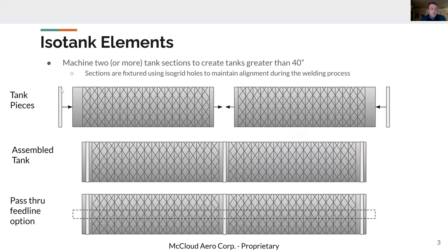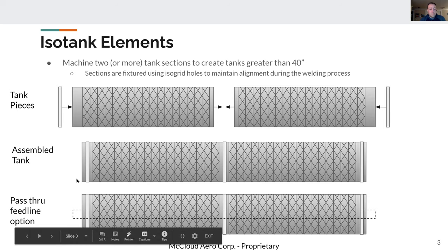The tank elements will be two end caps and two cylinder sections — possibly up to three sections depending on MDO results. There's also potential to route the feed line through the center of the tank rather than externally along the outside — routing it through and welding the ends — but that's something to evaluate for pros and cons.